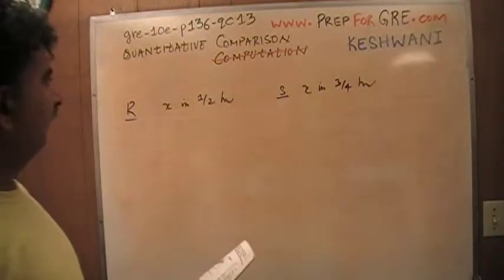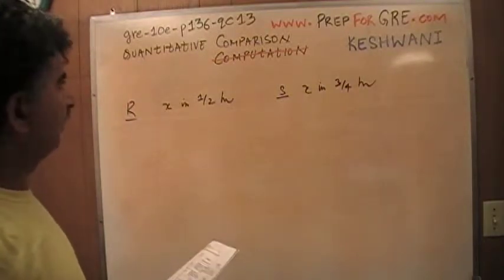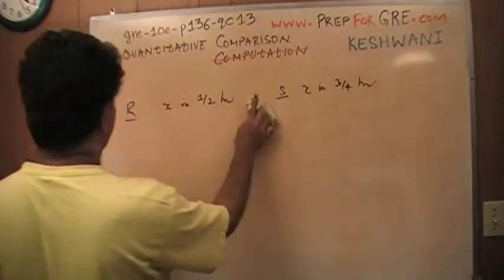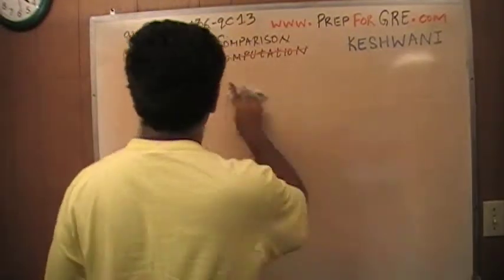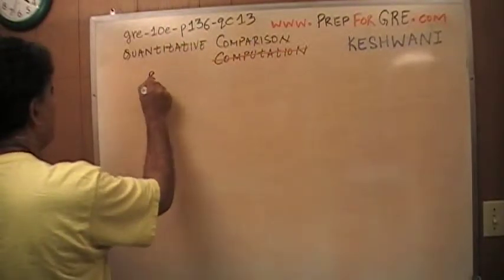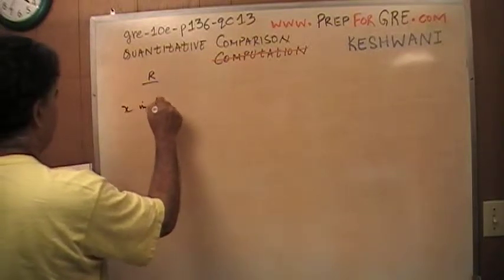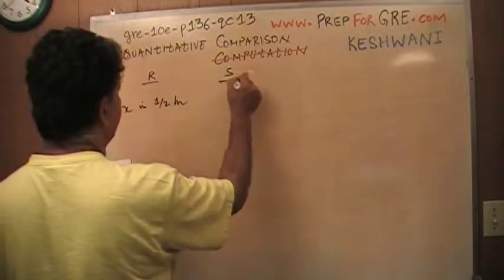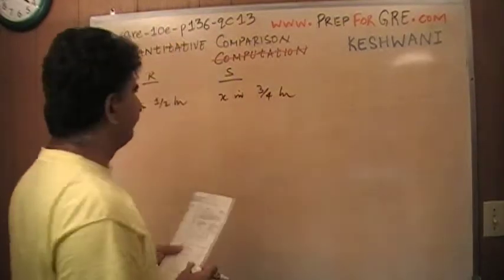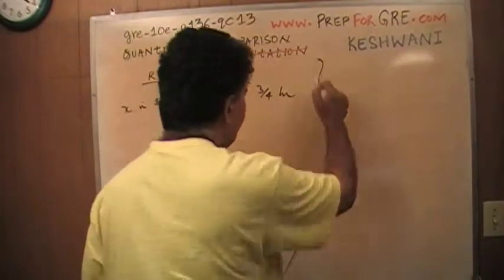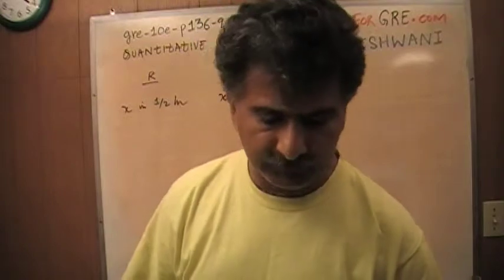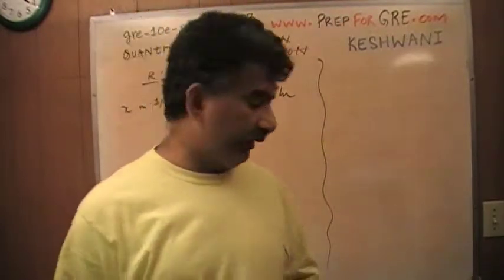There are two ways to solve this. Machine R does X in half an hour, and machine S does X in three-quarters of an hour. This is an algebraic problem and there are two ways of solving it.